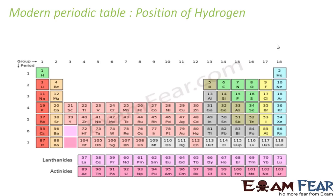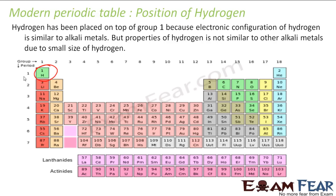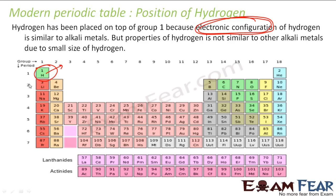The position of hydrogen: it is placed in group 1 because it has an electronic configuration similar to alkali metals. Electronic configuration is the critical factor for arranging elements, so there is no confusion about where hydrogen belongs. However, hydrogen is actually a non-metal, shown in green, whereas it is placed with metals. Its properties are not fully similar to alkali metals because hydrogen is very small in size.